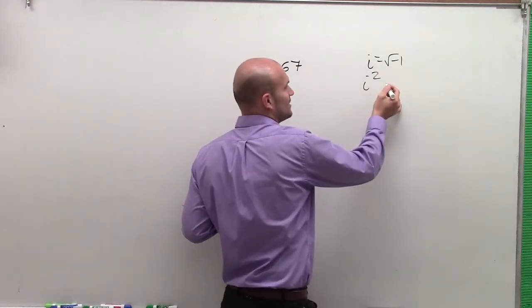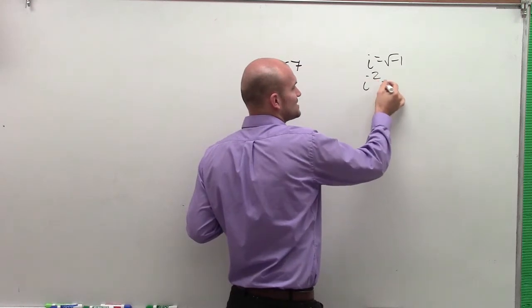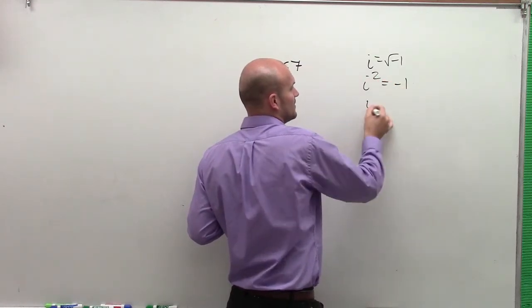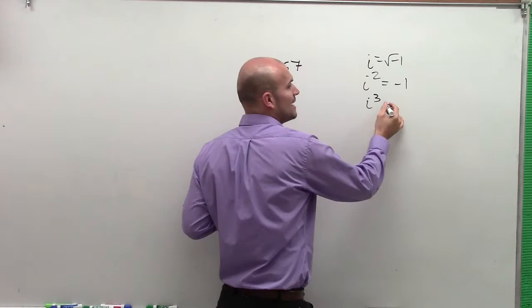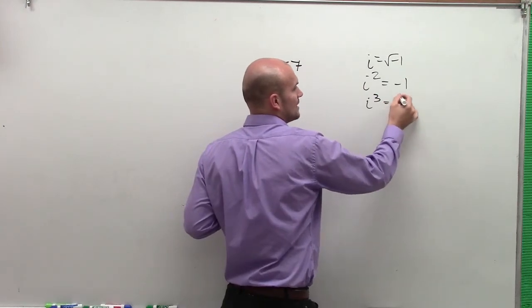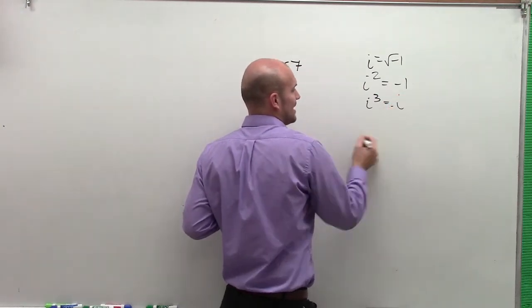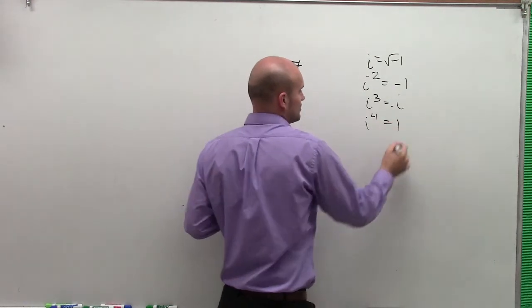Then when we squared both sides, we end up with i squared equals negative 1. Then when we kept on multiplying by i, we got i cubed equals negative i. And then i to the fourth equals positive 1.